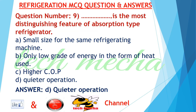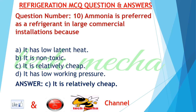Question number 9: What is the most distinguishing feature of an absorption type refrigerator? A. small size for the same refrigerating capacity, B. only low grade of energy in the form of heat used, C. higher COP, D. quieter operation. Answer: D. quieter operation.